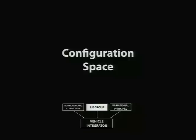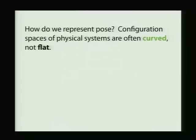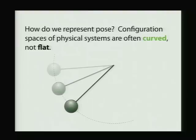Okay, so now that we understand our constraints, let's talk about how we represent these complex configuration spaces that we often see in vehicles. So as you're probably aware, a lot of physical systems have configuration spaces that are curved, not flat. For instance, a pendulum moves along a circle, not a line or a plane.